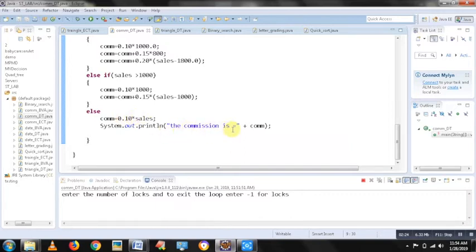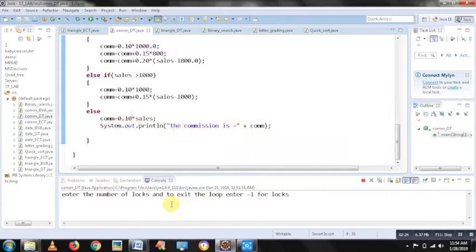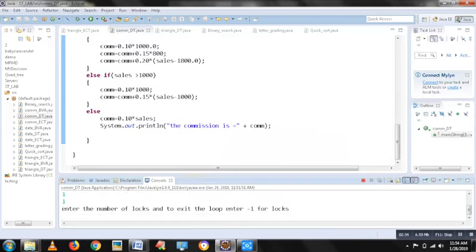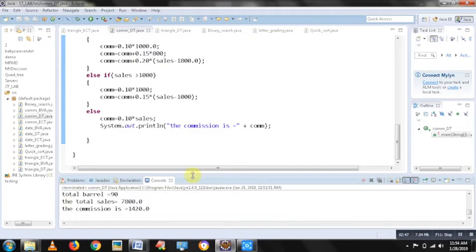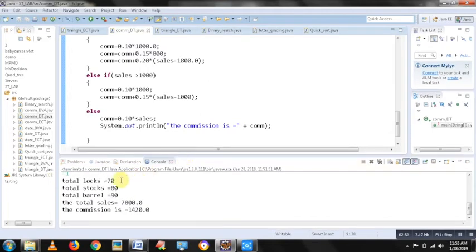Finally, I would print what is the commission. Let us see the output. Assume, I have sold one log, one stock, one barrel. Next, I can sell 69 more locks, 79 stocks and 89 barrel. So, totally I have sold 70 locks, that is 69 plus 1, 80 stocks and 90 barrel. Total sales is 7800, commission is 1420.